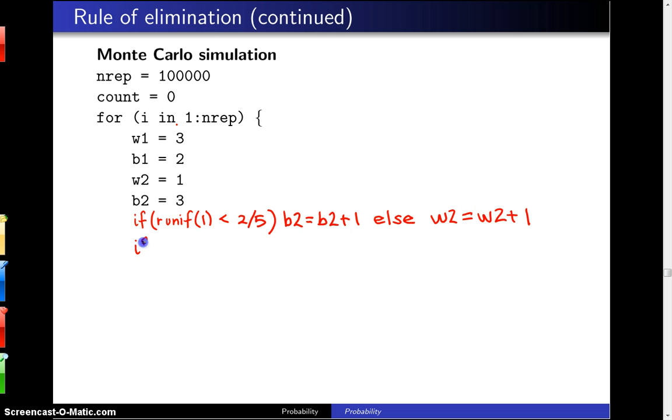Now we're going to put in the draw from urn 2. Where did that come from? So we take another random number, which is equally likely to between 0 and 1. And we want to say if that is less than the ratio of black balls to white balls plus black balls in that second urn, whatever that ratio is...